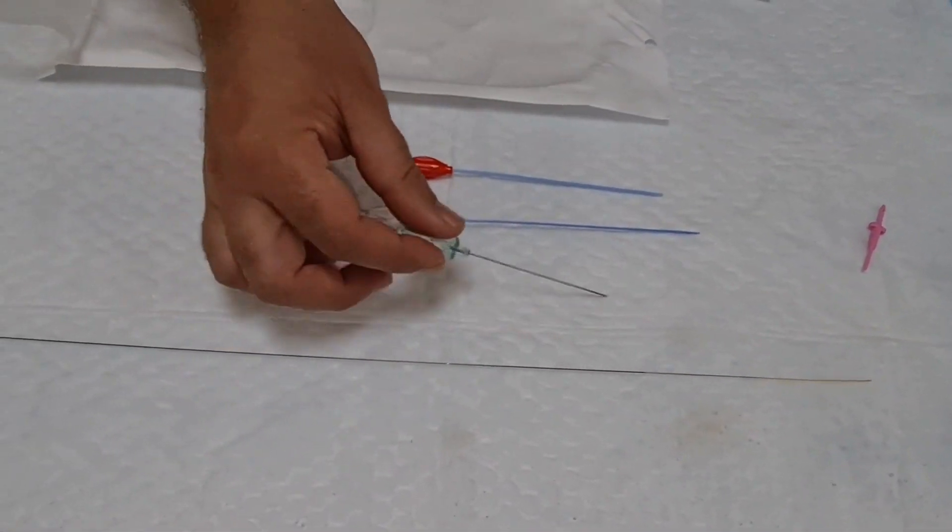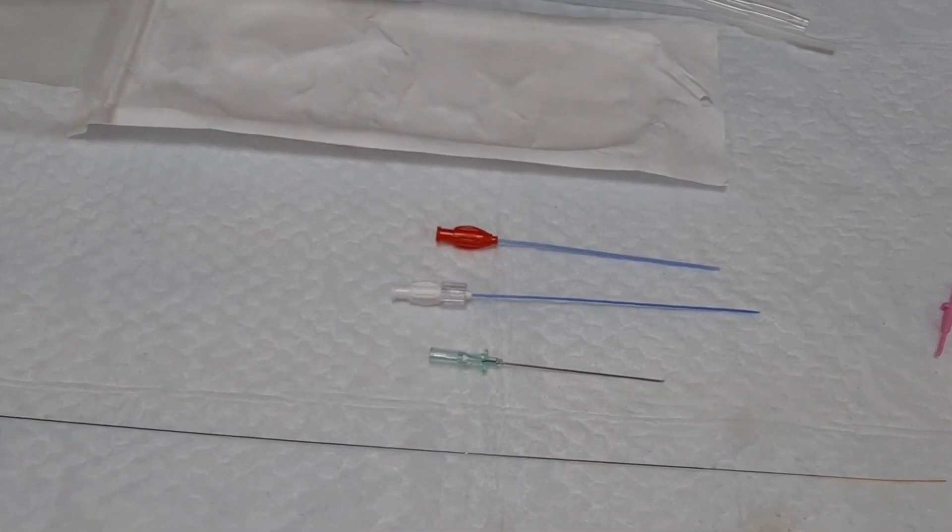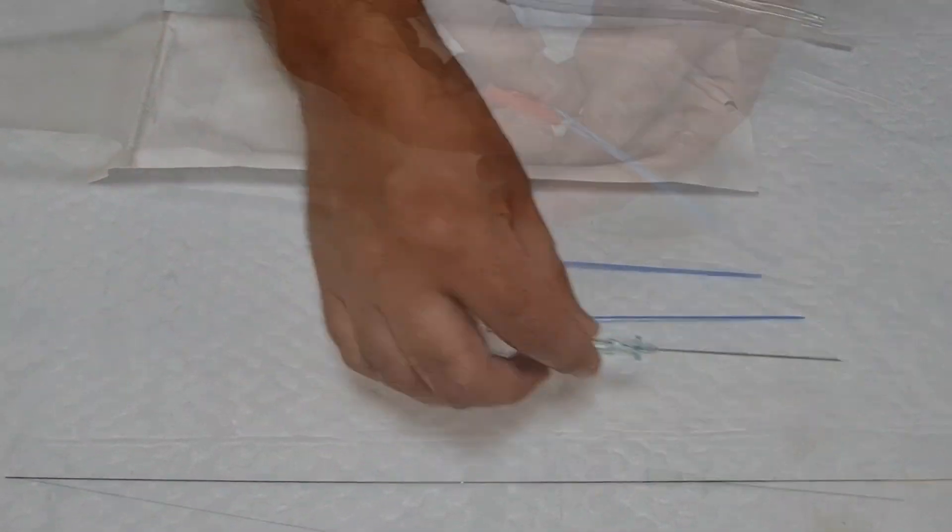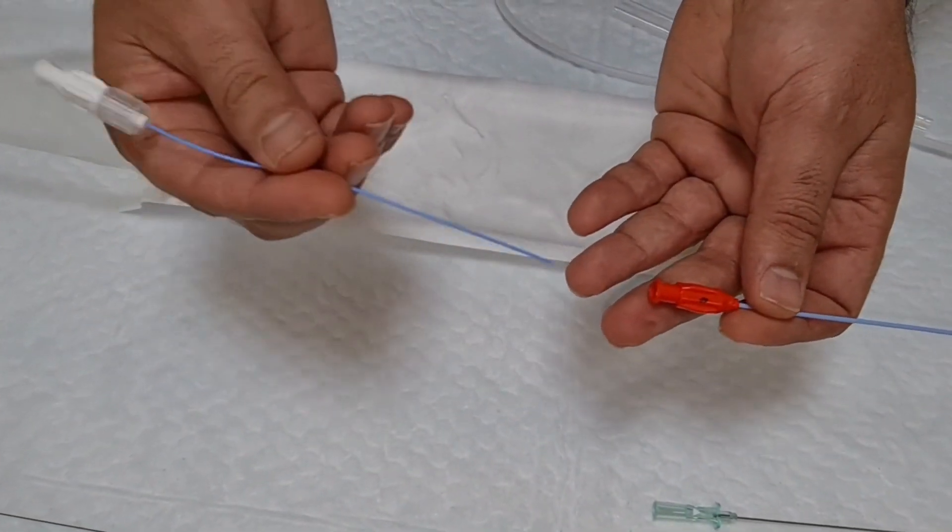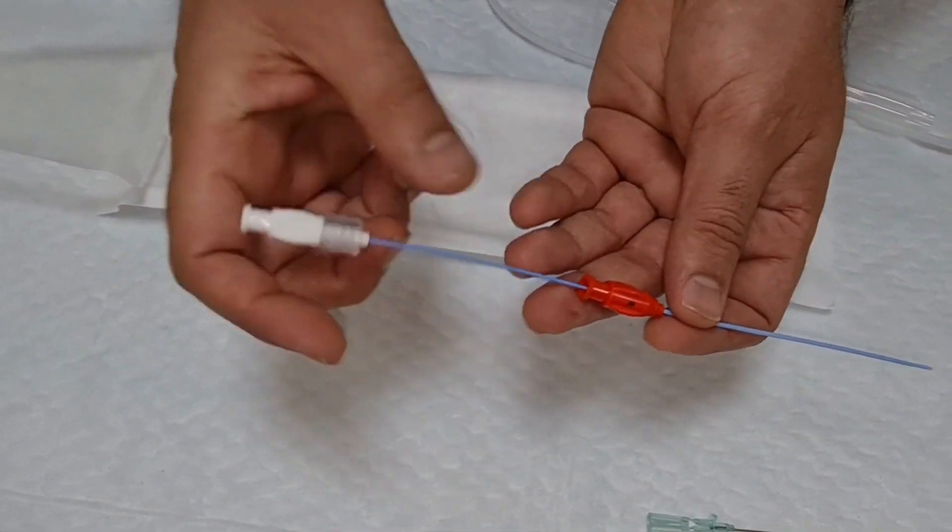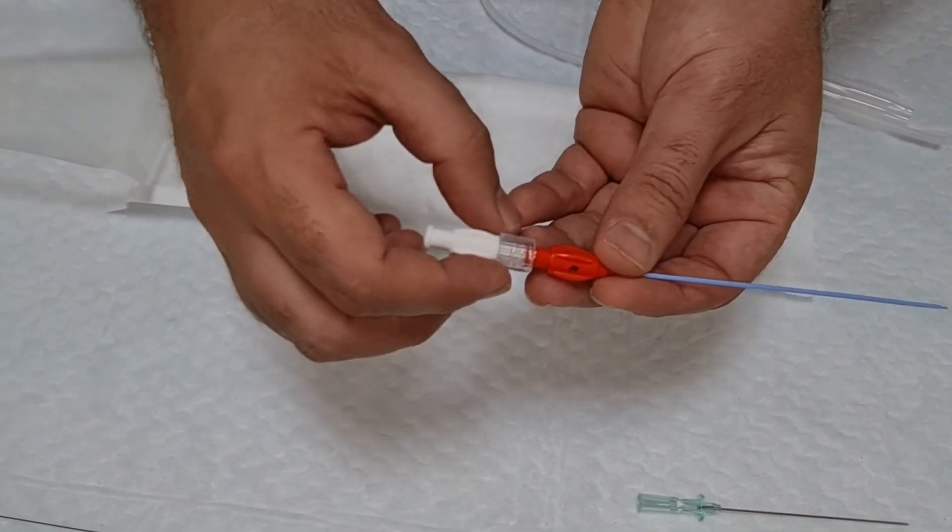Now the question is how we use it, how to prepare it for the use. So insert the dilator into the sheet, rotate it to lock.